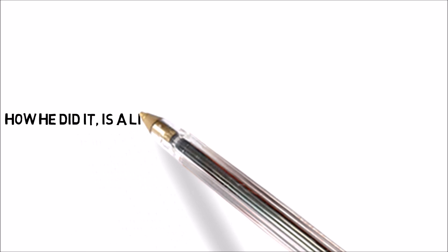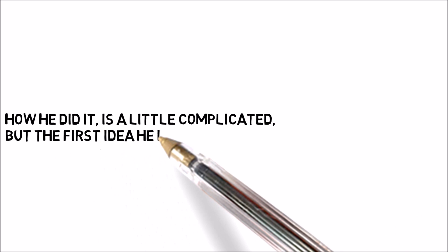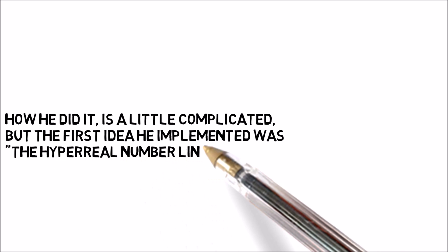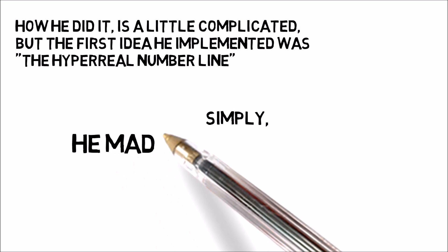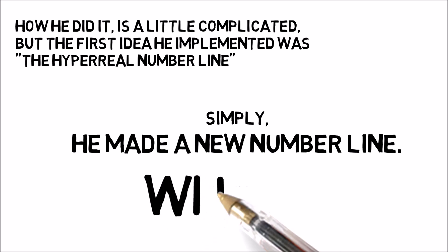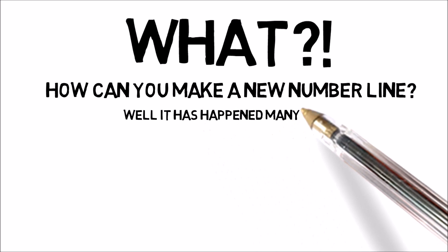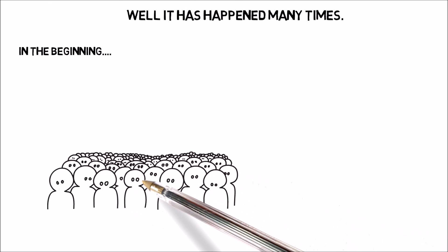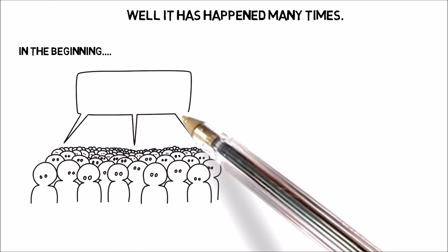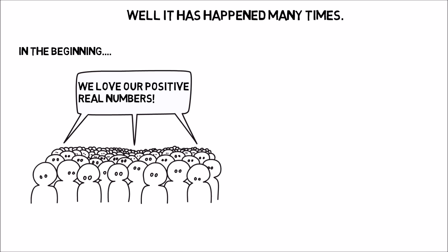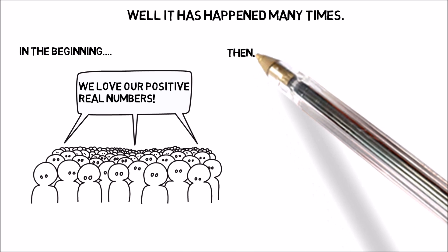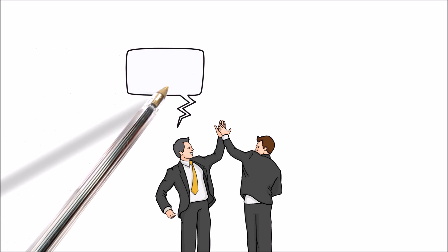How he did it is a little complicated. But the first idea he implemented was the hyperreal number line. Simply, he made a new number line. What? You may ask how can you make a new number line? Well, it has happened many times. In the beginning, we only had positive whole real numbers. One sheep, three goats, nine geese.